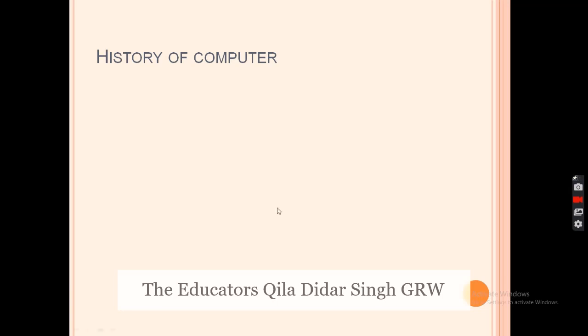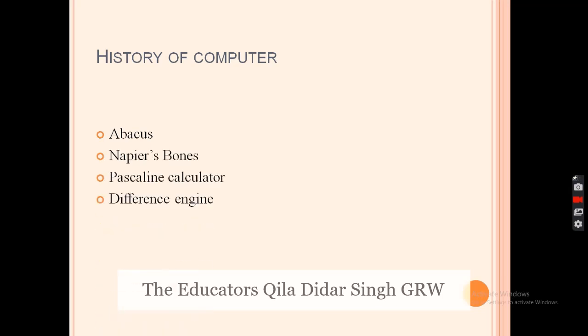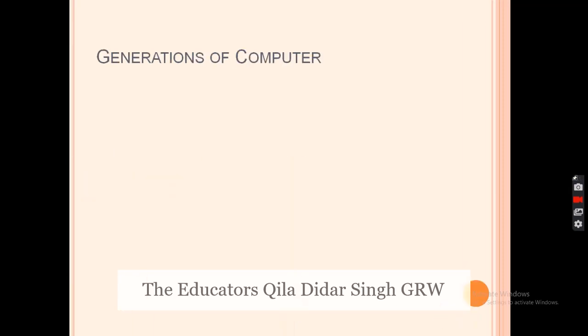The first device is the abacus, which is used for minor operations like addition, subtraction, multiplication, and division. Then we used the mechanical calculator, and then the Difference Engine. The Difference Engine is used for advanced-level mathematical calculations including polynomial functions, squares, cubes, and fractions. Now we go back to our main topic: Generations of Computers.